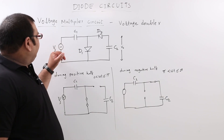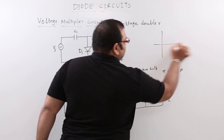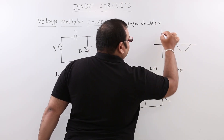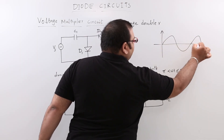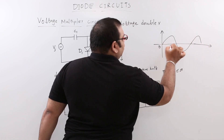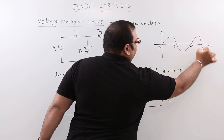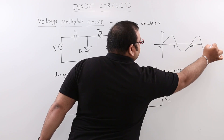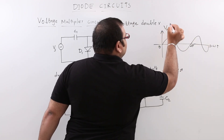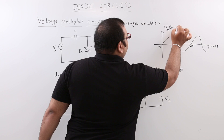Let us take Vs as a sinusoidal voltage. This goes from 0 to pi, then from pi to 2pi, and continues like this. The x-axis is omega t and the input voltage is Vm sin(omega t), where Vm is the maximum peak voltage.